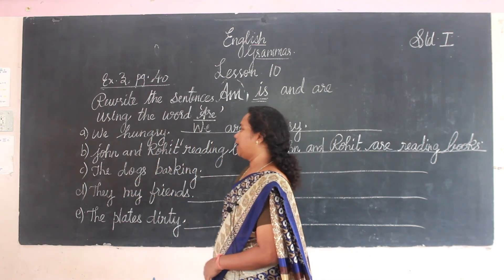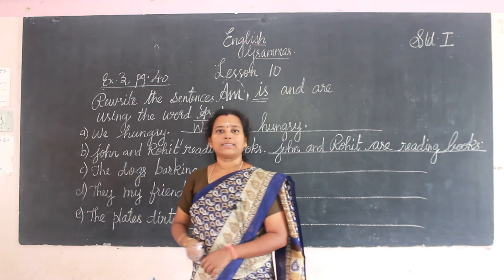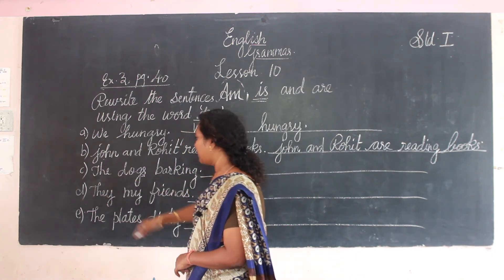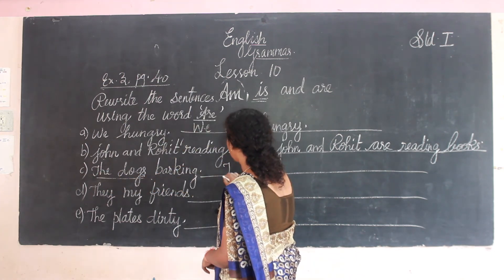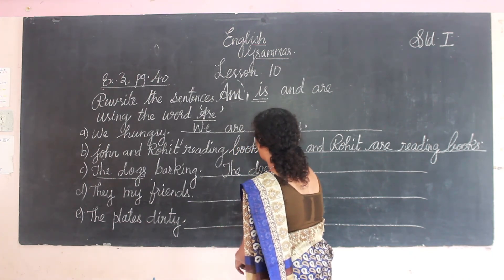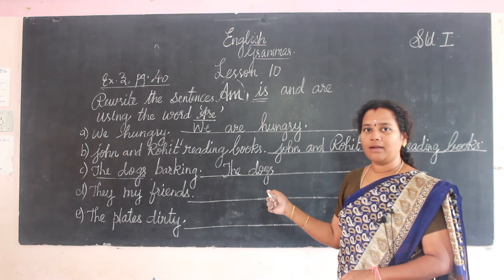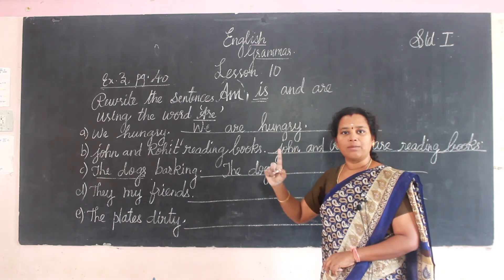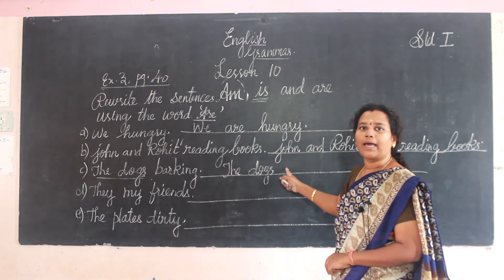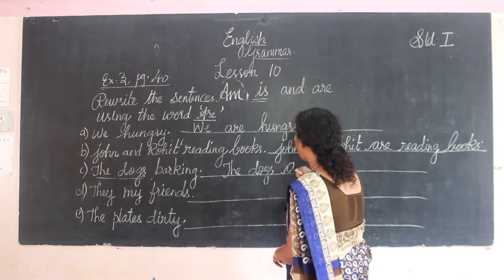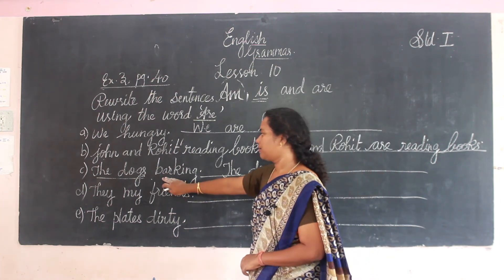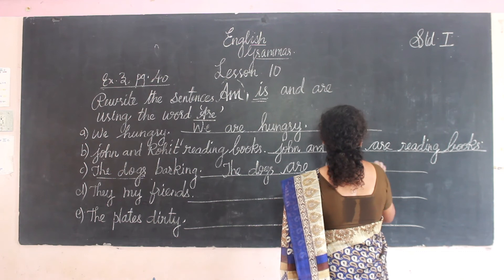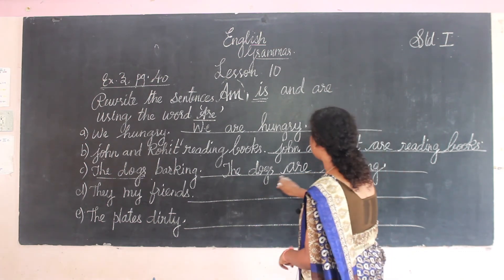Third: 'The dogs barking.' Dogs — plural, more than one animal. So we add 'are': 'The dogs are barking.' Not one dog, more dogs — so we are adding 'are'.